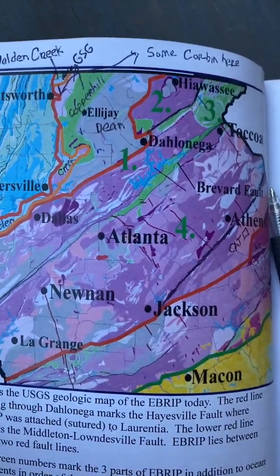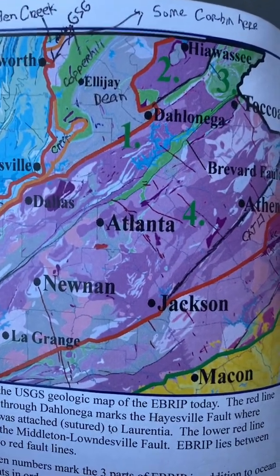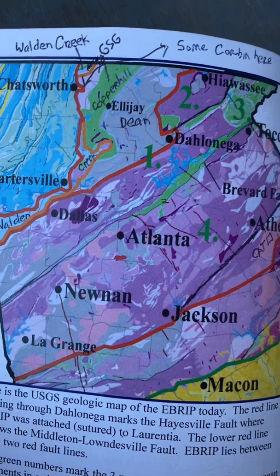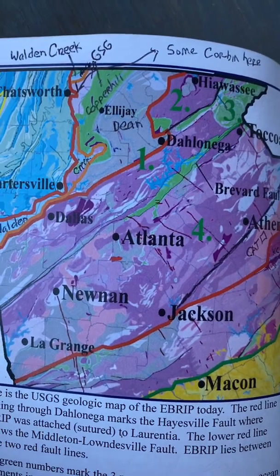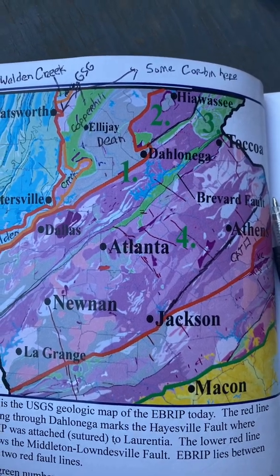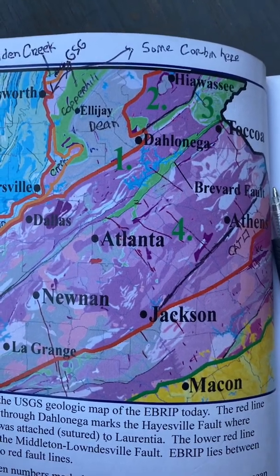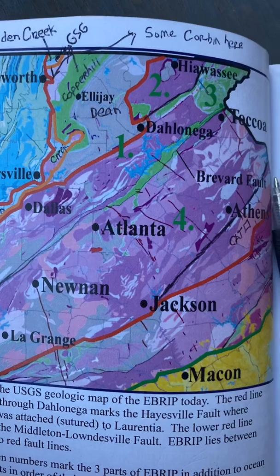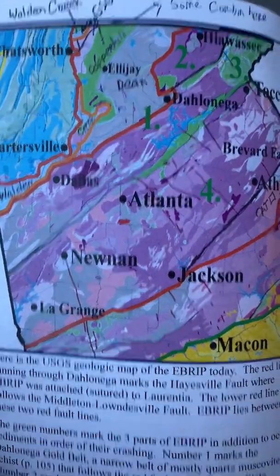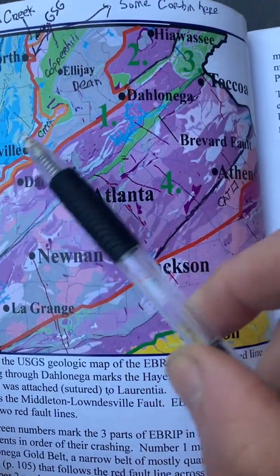Most of the faults in Georgia — virtually all of them except the Brevard Fault Zone — are major thrust faults. A thrust fault is like two pancakes lying beside each other where you slide one up on top of the other. But the Brevard Fault Zone is not a thrust fault — it goes nearly straight down, almost vertical, like two blocks of rock beside each other with the space between them going straight down.